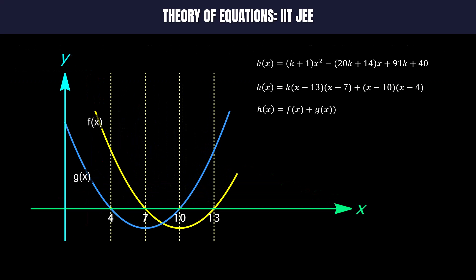Let us analyze the graphs of f(x) and g(x) by breaking the domain into five intervals. First, when x is less than or equal to 4. In this interval the value of h(x) is always positive because f(x) and g(x) are non-negative. Hence h(x) will not have any root in this interval.